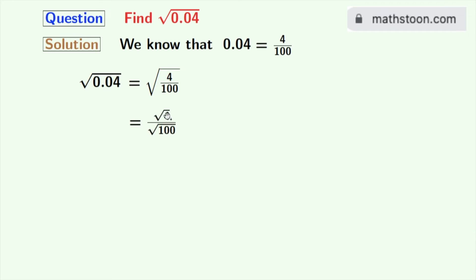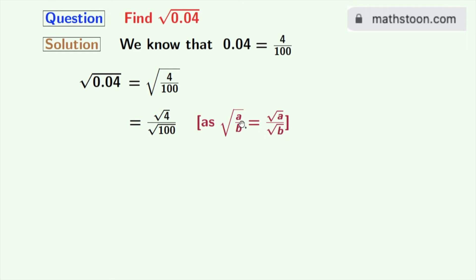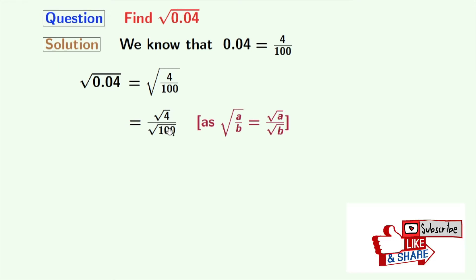Now we will rewrite this as square root of 4 by square root of 100. Here we have used the rule: square root of a by b is equal to square root of a by square root of b, where a is 4 and b is 100. As square root of 4 is equal to 2 and square root of 100 is equal to 10.